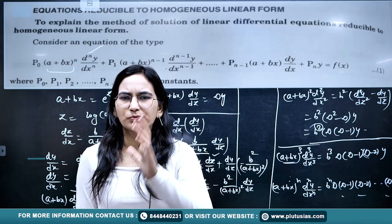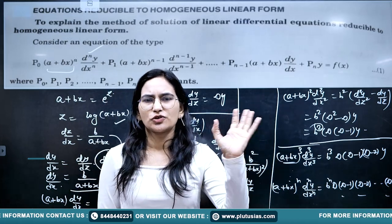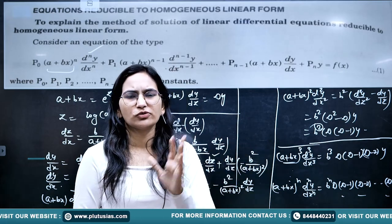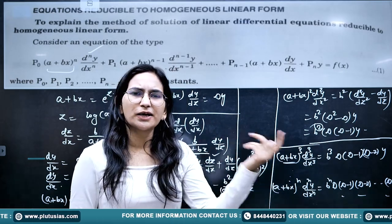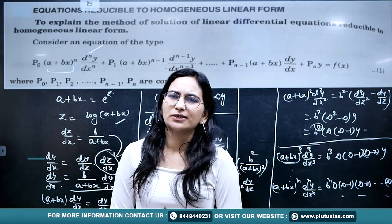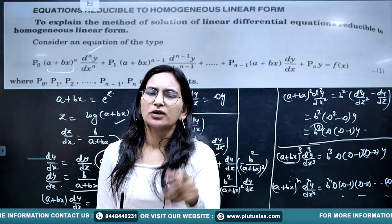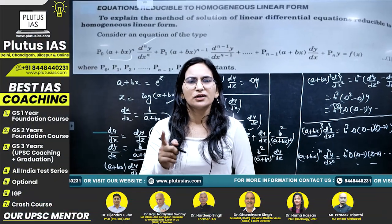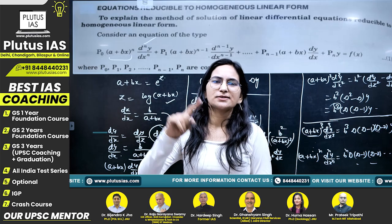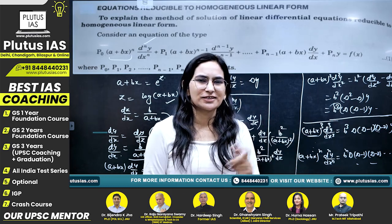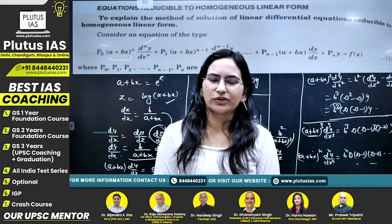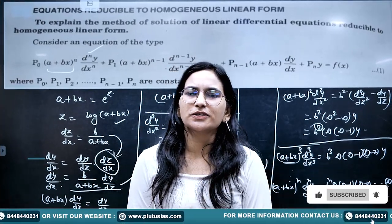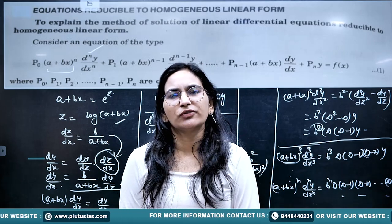The formula is simple: put x = e^z, or a+bx = e^z, and then proceed. The procedure is the same — replace the independent variable x with a new variable z, and the equation reduces to a linear differential equation with constant coefficients. To solve those, we use the methods from part 2 of this revision series. That was part 3 of the revision series. In the next part, we will be revising some specific methods to solve second order differential equations.